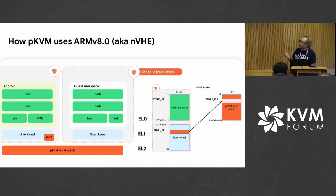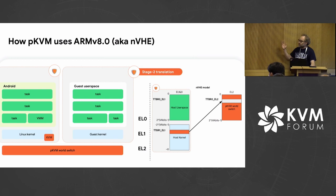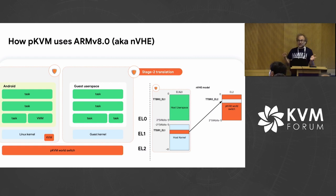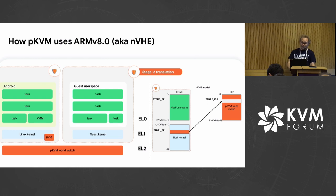In terms of translation, it's actually exactly the same, except that we can play with permissions so that for the pages given to EL2 from the host kernel, we can either give exclusive access to EL2, or we can keep some access at EL1 if we want to share data between the host EL1 and EL2. So that gives us a fine-grained break. In the previous mode, we could write everywhere from EL1 — there's no security boundary between the two.